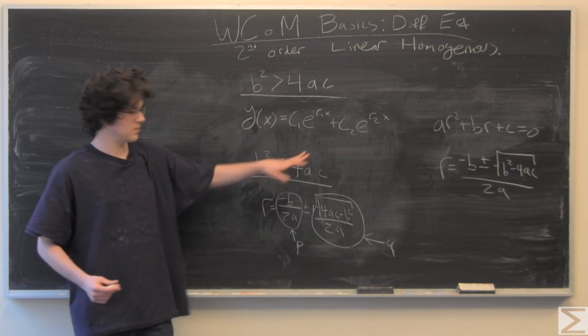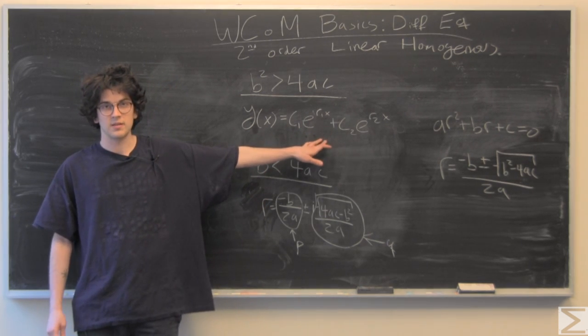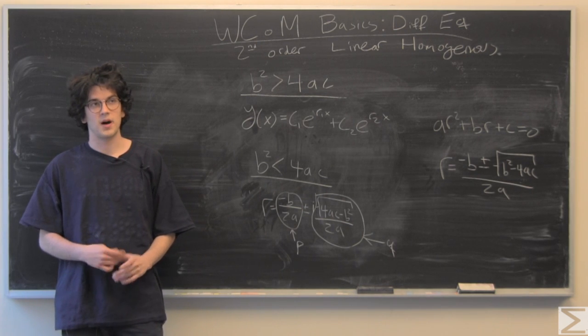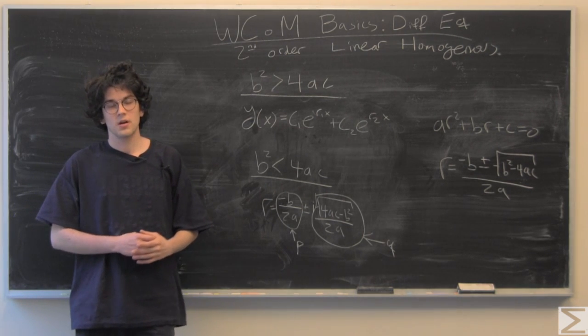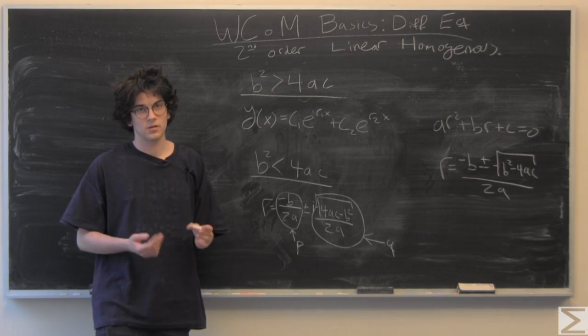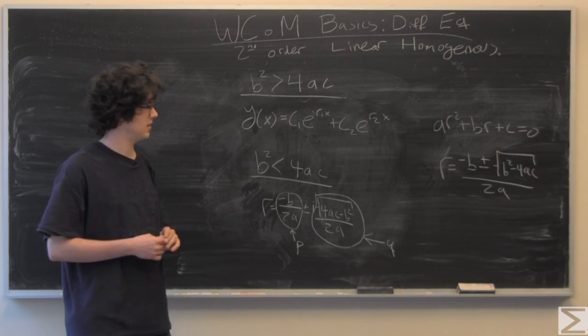We have r equals p plus or minus i times q. Of course, the equation is going to be in this form except with the minus iq or plus iq. It's going to give us a little bit more to work with and condense down.